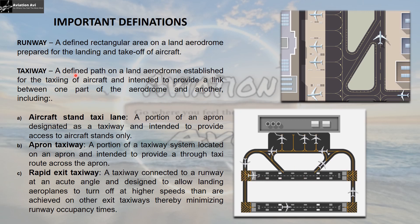Number two is the taxiway. It is a defined path on a land aerodrome established for the taxiing of aircraft and intended to provide a link between one part of the aerodrome to another. As you can see in the image, this is the taxiway that provides a link from the apron to the runway. This is another taxiway which provides a link from the runway to another taxiway, and this taxiway provides a through route across the apron.